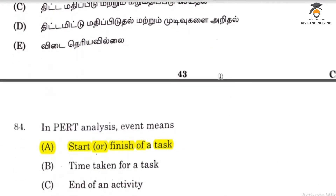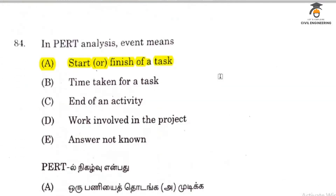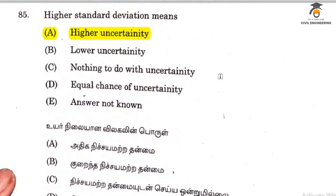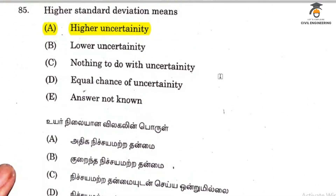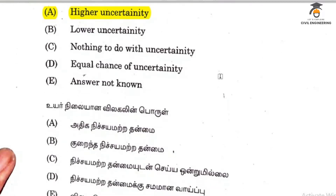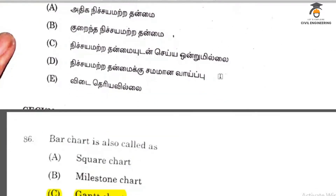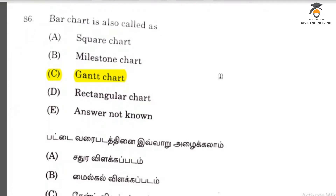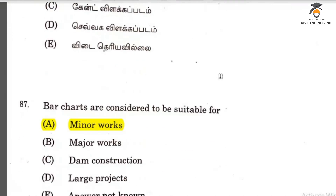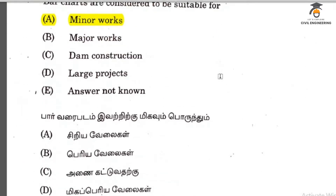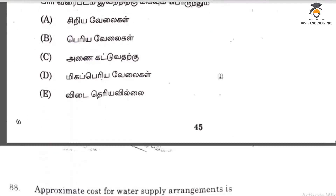PERT stands for Program Evaluation and Review Technique. PERT analysis deals with the start or finishing of a task at the event level. Higher standard deviation means higher uncertainty. A bar chart is also called a Gantt chart and is considered suitable for minor works.